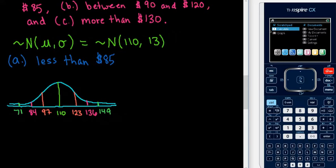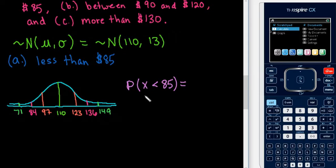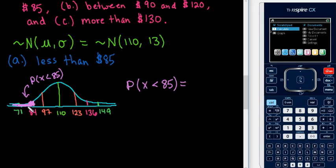For this particular one, we are looking for the probability that our randomly selected variable X is less than $85. On our sketch, $85 is just about at the $84 mark, so it's almost two standard deviations below the mean. The probability of something is the same as the area under the curve — so the probability that X is less than $85 is the shaded area, representing the proportion or percentage that is shaded.